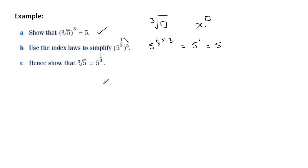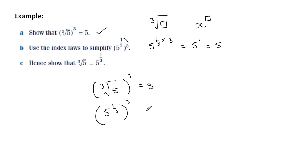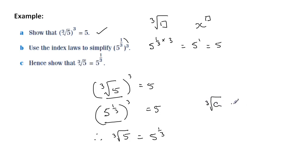That means that if the cube root of 5, all cubed, equals 5, and if 5 to the third, all cubed, also equals 5, then the things inside the brackets must be the same. So we can say, therefore, the cube root of 5 is exactly the same as 5 to the power of a third. The rule is: if you have the cube root of any letter or number, that is exactly the same as the base a to the power of a third.